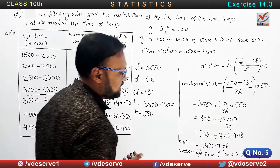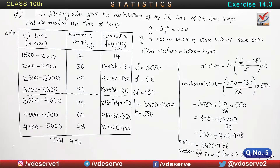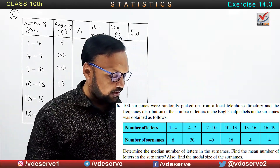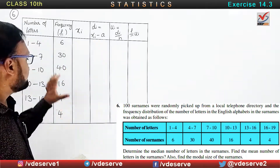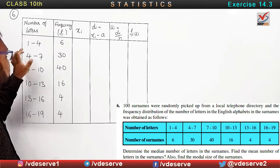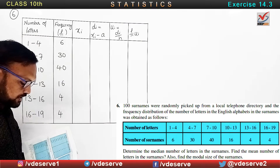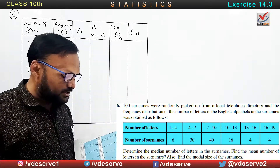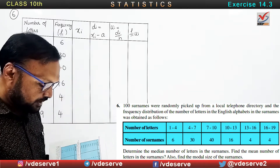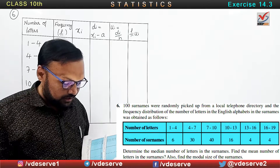Now question number 6. A hundred surnames were randomly picked up from a local telephone directory. The frequency distribution of the number of letters in the English alphabets in the surnames is given. Determine the median number of letters in the surname, find the mean number of letters in the surname, and also find the modal size of the surname.